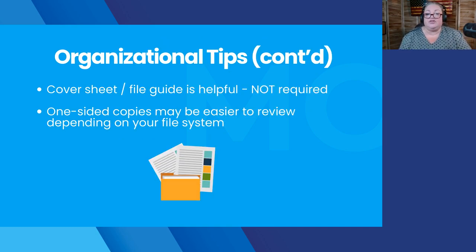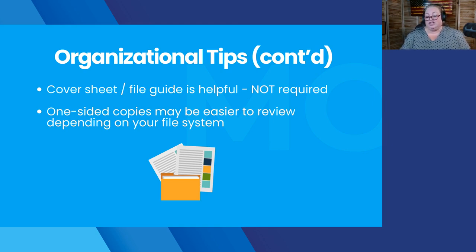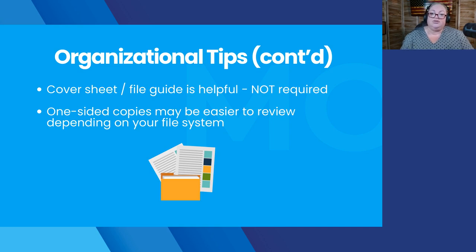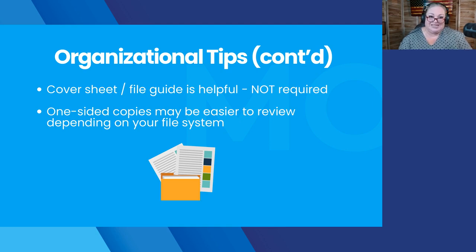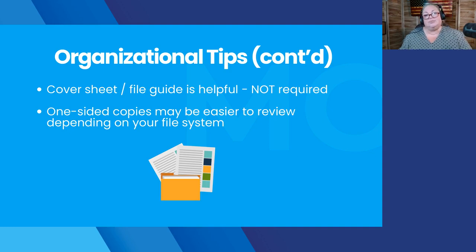Cover sheets or a file guide are very helpful — not required, but they help when reviewing your files to have a general idea of what order to expect things in. Some people do a cover sheet for each section; some just have a file system guide to provide. It also may be more helpful to have single-sided copies rather than double-sided, depending on your file system. Double-sided copies often make the file a little harder to review, and sometimes that can result in things not being seen. You always want to make that file easy to navigate and easy to find things.